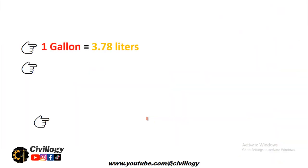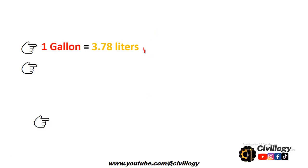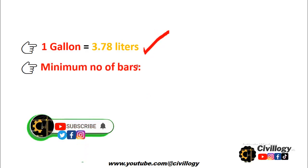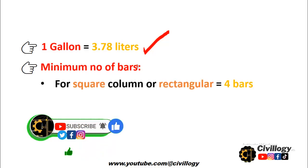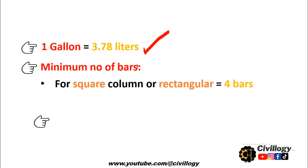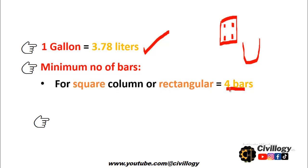1 gallon is equal to 3.78 liters. Regarding minimum number of bars: if asked how much steel bar should be provided in a square or rectangular column, the minimum bars should be four - two bars on top and two bars on the bottom. For a square and rectangular column the minimum is four bars, and for a circular column it should be six bars. This is the minimum number of bars.